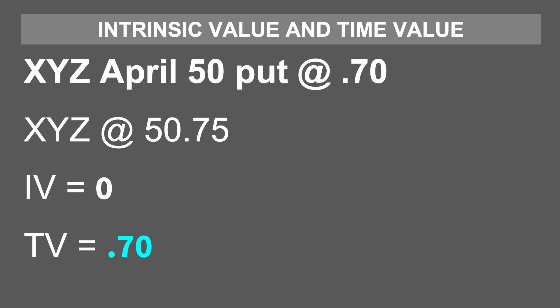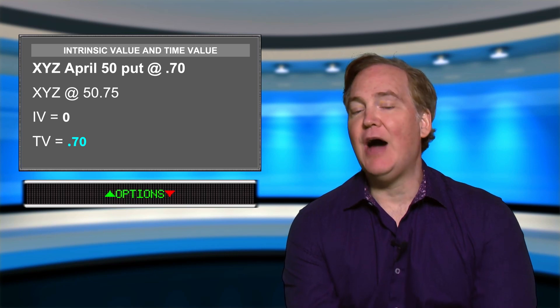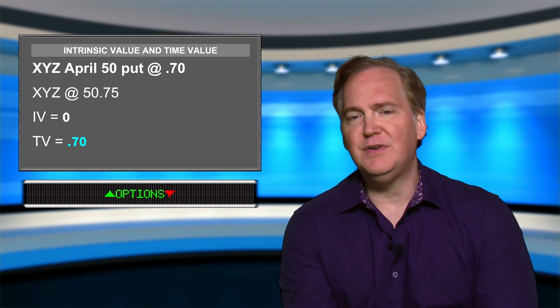Let's look at another put scenario. We have the XYZ April 50 put trading at a premium of $0.70 and XYZ is at $50.75. A put is out of the money when the stock price is greater than the strike price — $50.75 is indeed higher than $50, so this option is out of the money. It has no intrinsic value, therefore the entire $0.70 premium is made up of time value. I think we just did a great review of the basics of options for your exam. Review this material in your text and take some option questions in your test banks.